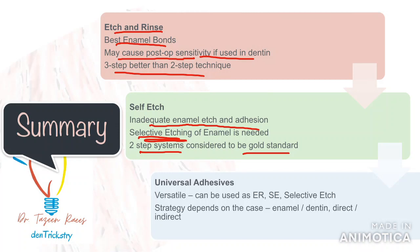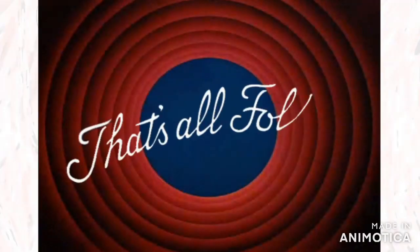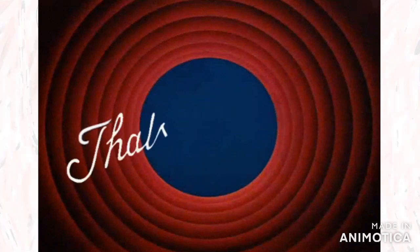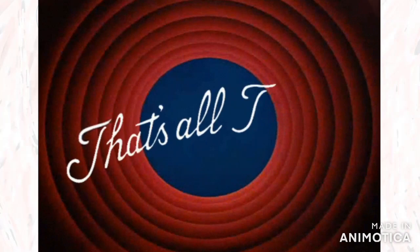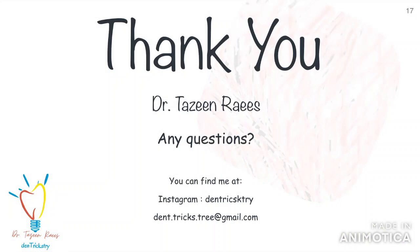Universal adhesives are the most versatile and can be used with any technique — etch and rinse, self-etched or selective etch. The strategy depends on the case: whether it involves predominantly enamel or dentine, and whether you are using direct or indirect restoration. Universal adhesives also come with dual cure activators, so read the manufacturer's instructions to determine if you need one for indirect restorations. With this, we come to an end. Whichever technique you use, it largely depends on the operator's efficiency as well, so follow the manufacturer's recommendations thoroughly. Do give your inputs on what bonding agent or strategy you prefer, mention any questions in the comment section below, and don't forget to like, share and subscribe to my channel.